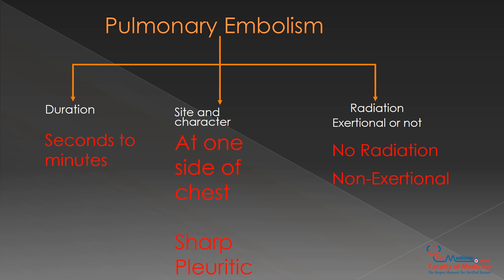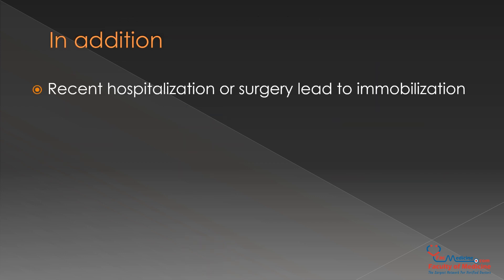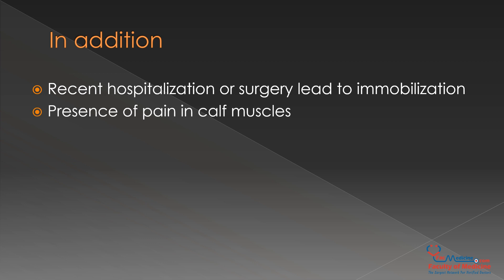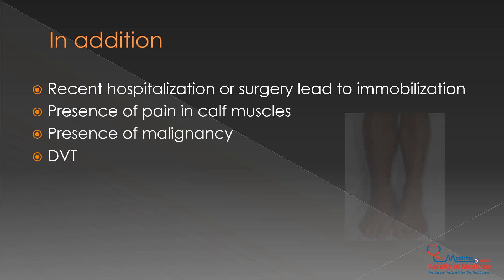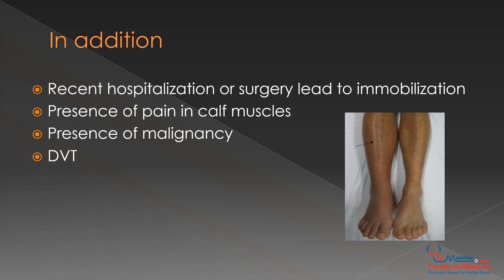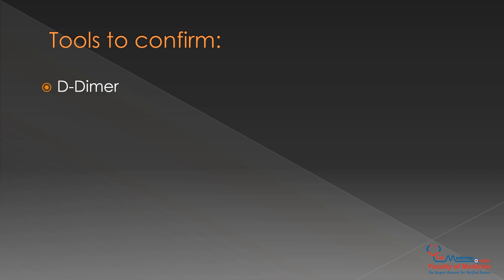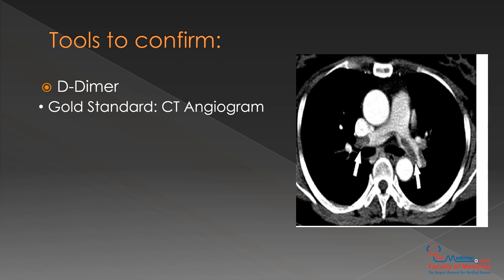In addition, we need to ask about any recent hospitalization or surgery that led to immobilization, presence of pain in calf muscles, presence of malignancy, and DVT. As seen in this picture, the right leg is swollen and red compared to the left leg, most probably because of DVT. Tools to confirm pulmonary embolism are D-dimer, and the gold standard is CT angiogram — as seen in this CT, there is a clot blocking the branches of the pulmonary artery main trunk.